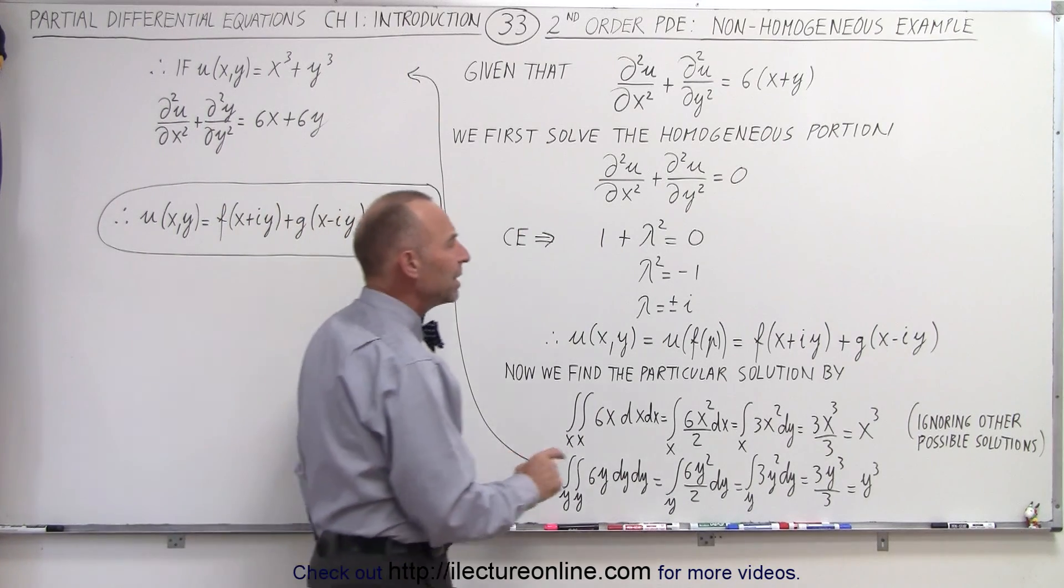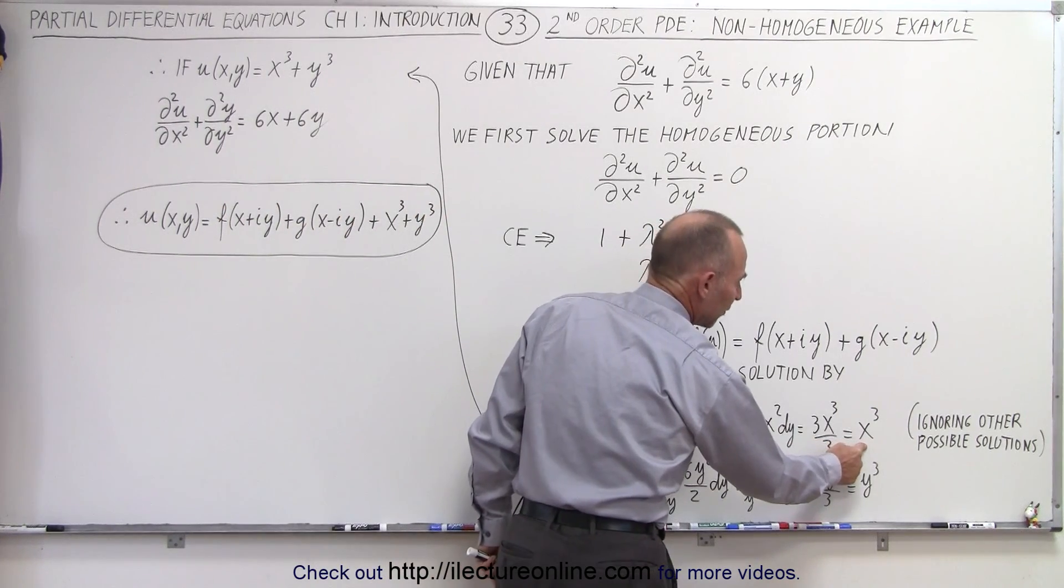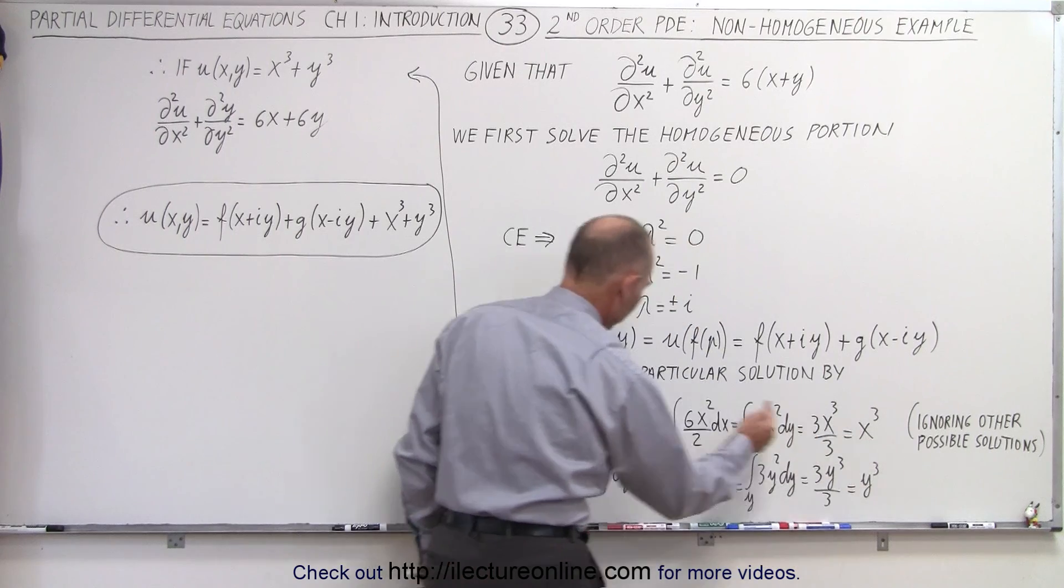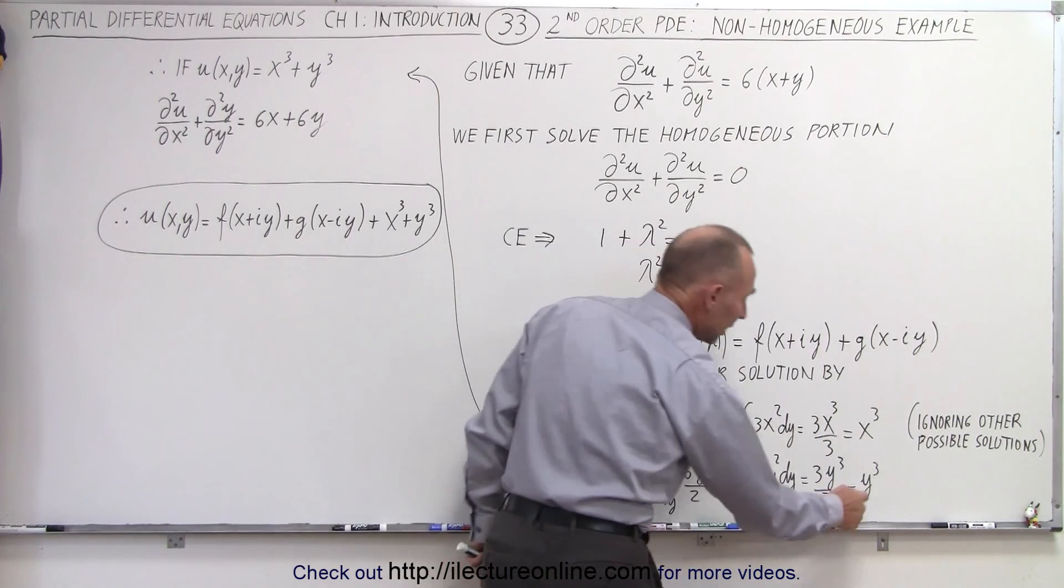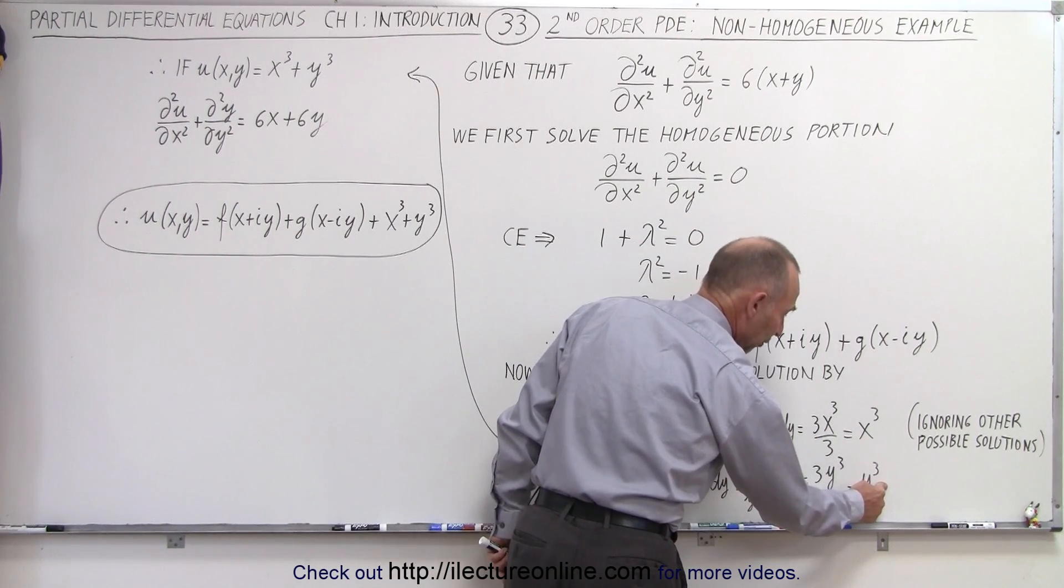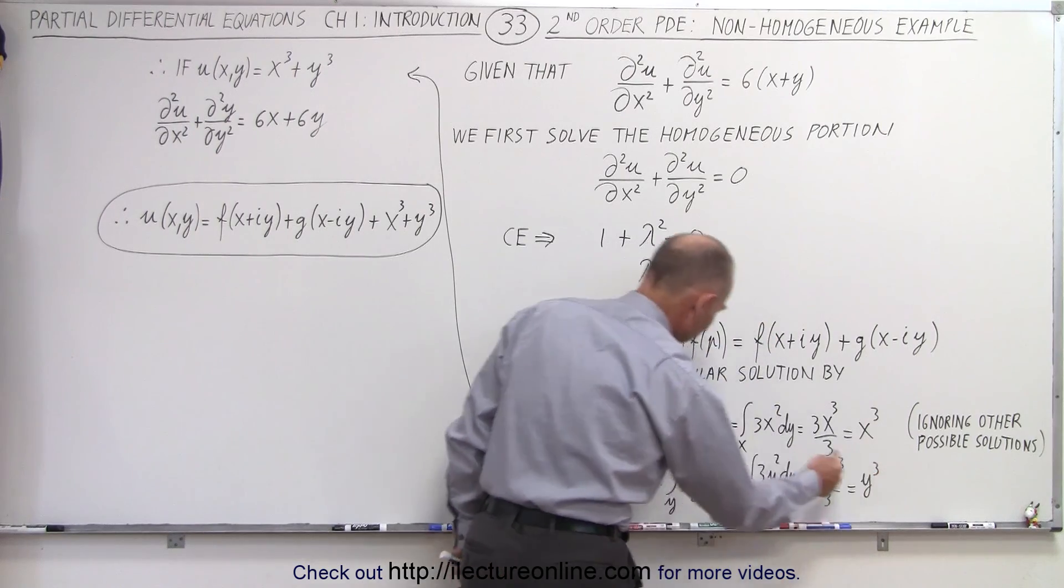But at least we know that if we take the second partial derivative of x cubed with respect to x, we get 6x. And we take the second partial derivative of y cubed with respect to y, we get 6y.